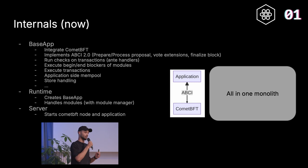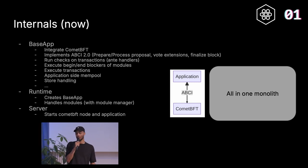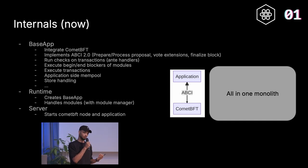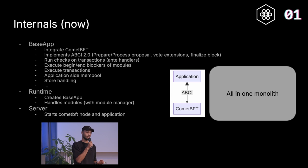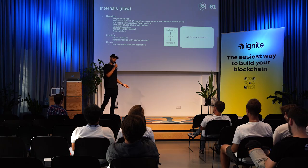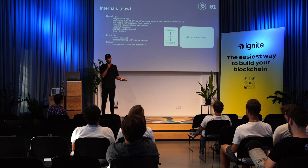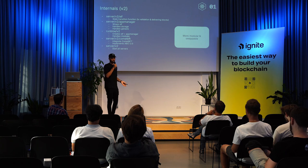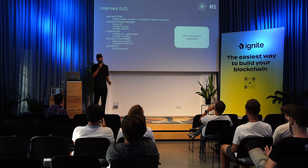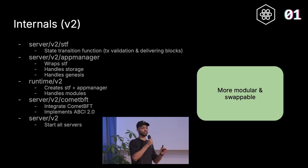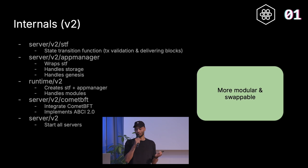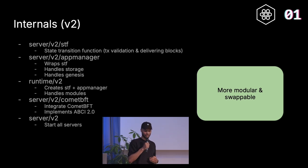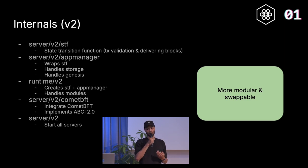On top of BaseApp, you have something called the runtime, which creates the base application. Runtime is what you will mostly interact with as a developer of your chain — you simply wire your modules into runtime. And then there's the server component, which starts the node and handles starting, stopping, and the rest of the CLI. Now we're moving into a v2, more modular approach, where BaseApp was doing too many things and is being split into smaller, more easily replaceable components.